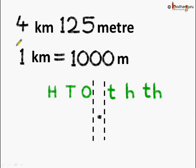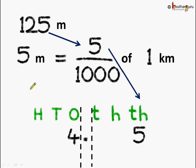Now let's start the conversion. 4 kilometers and 125 meters. We know 1 kilometer is equal to 1000 meters. So the position after the decimal point should extend to the thousandths place. That is why we have written here the tenth, hundredth, and thousandths places after the decimal point. Since there were 4 kilometers, that is the whole number part, we put 4 at the ones place. Next, we come to the 5 meter part. 5 meters was equal to 5 by 1000 of a kilometer, so we write 5 at the thousandths place.